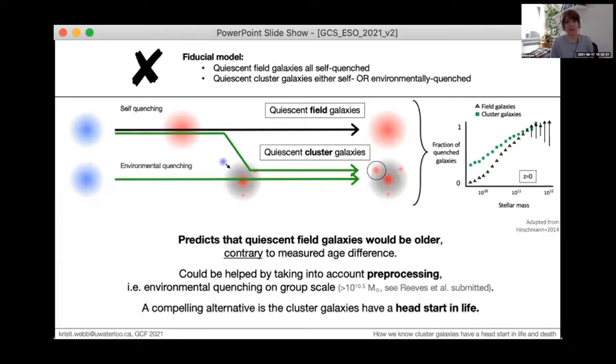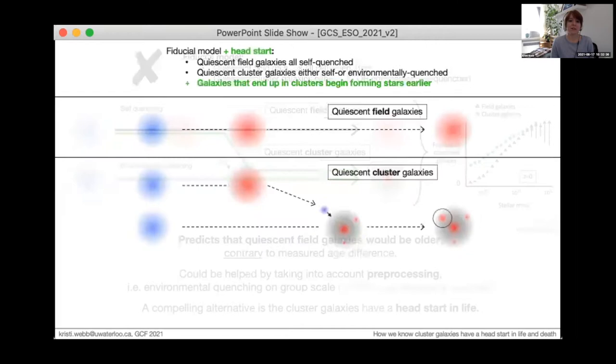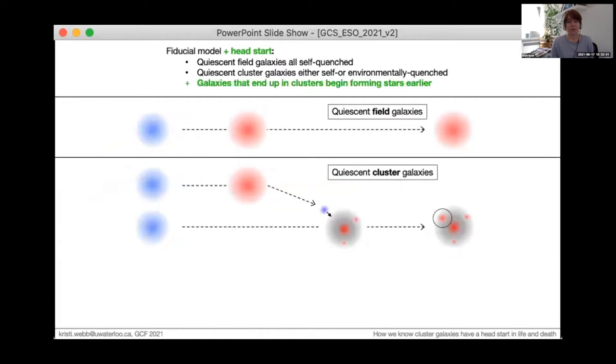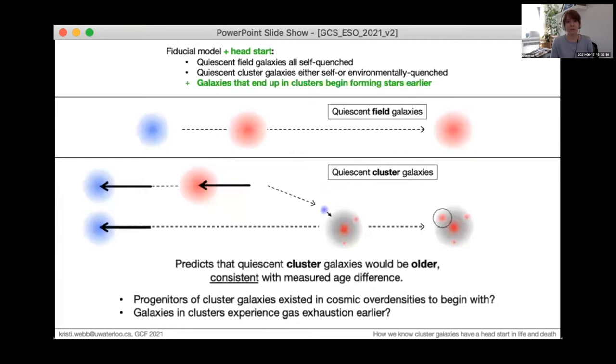A compelling alternative scenario is that cluster galaxies otherwise just have a head start in life. So returning to the fiducial model, we make one change. While we have the same two quenching channels as before, we add that galaxies in clusters began forming stars sometime earlier than isolated galaxies. If the galaxies that end up in clusters began their evolution earlier than galaxies in the field, then the average age difference would be in the same sense that we measure.